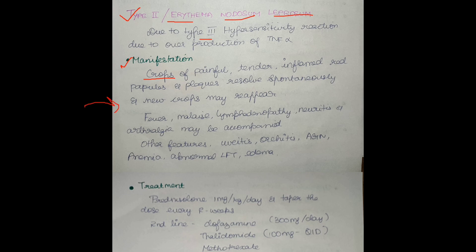It crops out and the patient presents with fever, malaise, and lymphadenopathy. The patient might also have arthralgia. Other features include eye involvement such as iritis, orchitis, abnormal liver function tests, and the patient may also have anemia.